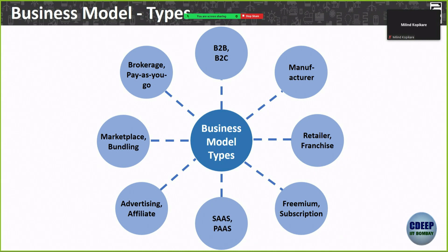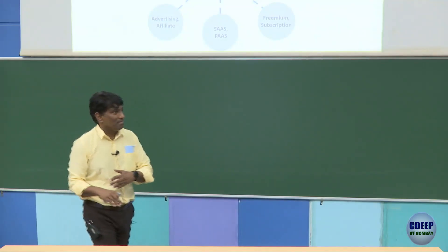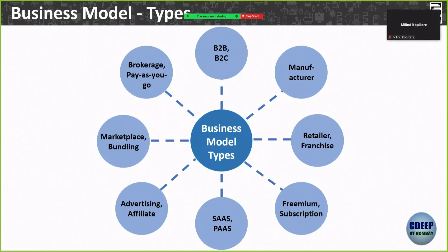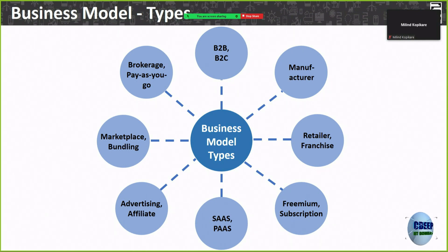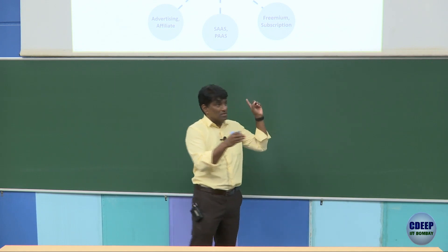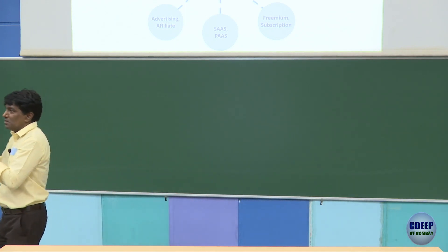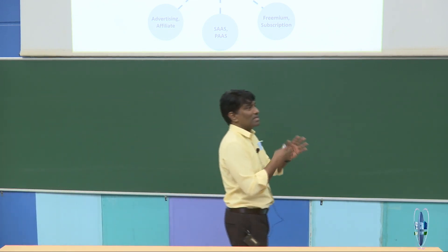For example, one team's paying customer is the government, but the government's choice to pay depends on regular people. If they provide data of regular people to the government, they can convince the government to pay — that becomes a B2G-to-C kind of model. Regardless of model type, you need a manufacturer model where you can dictate terms, retailer, franchise like D-Mart, pay-as-you-go, SaaS, PaaS, freemium, subscription, or marketplace bundling. Depending on your product, you figure out the best model — and your business model can change over time or differ for different customer segments.